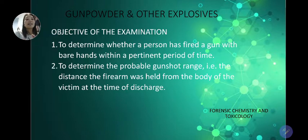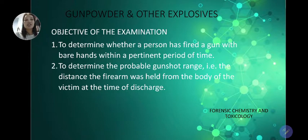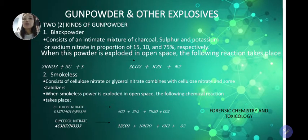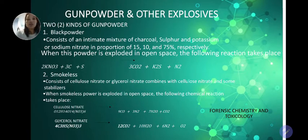Next objective is to determine the probable gunshot range — for example, the distance the firearm was held from the body of the victim at the time of discharge. There are two kinds of gunpowder. We have black powder, which consists of an intimate mixture of charcoal, sulfur, and potassium or sodium nitrate.